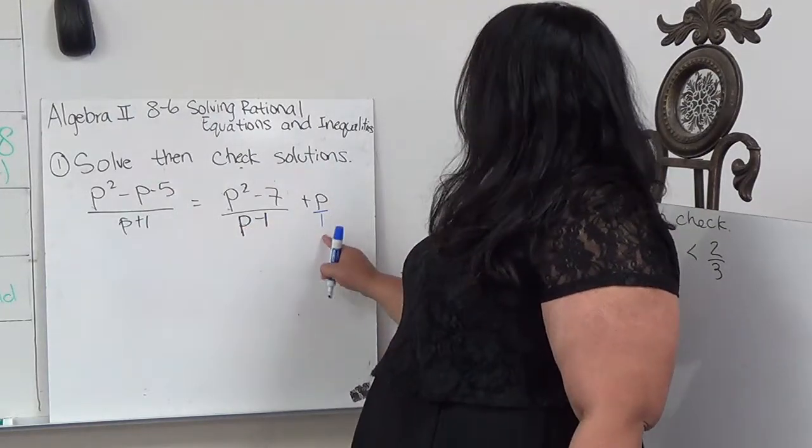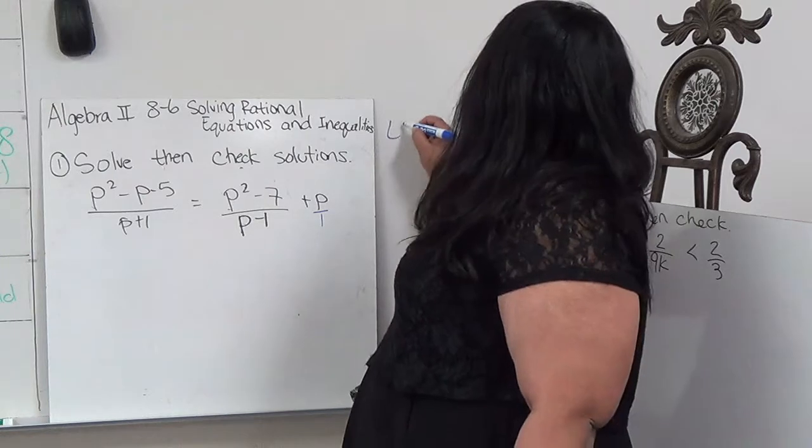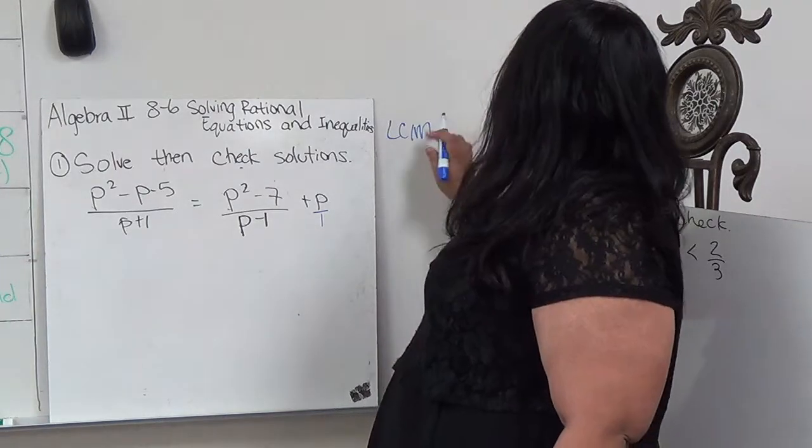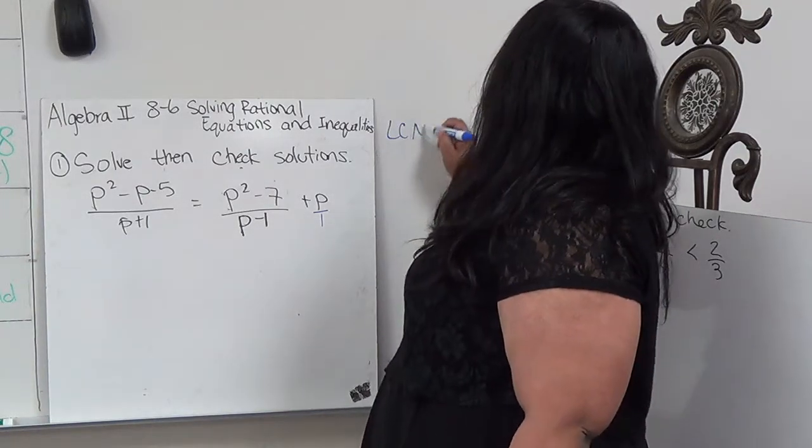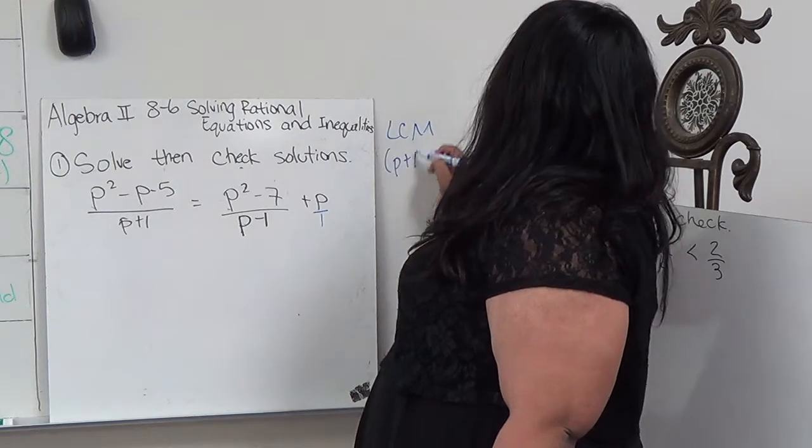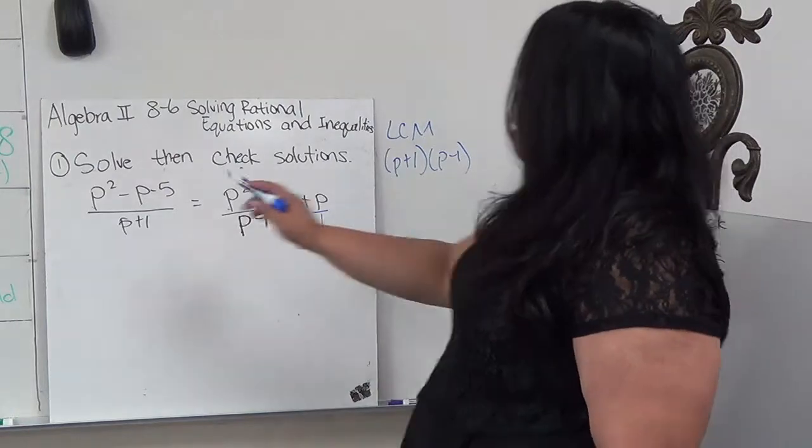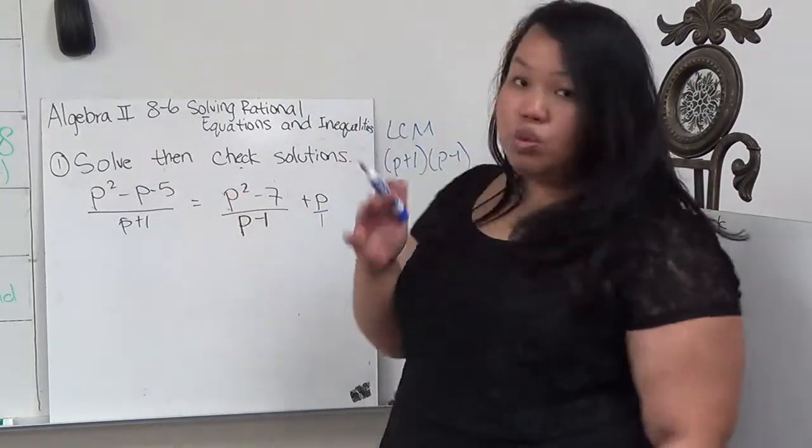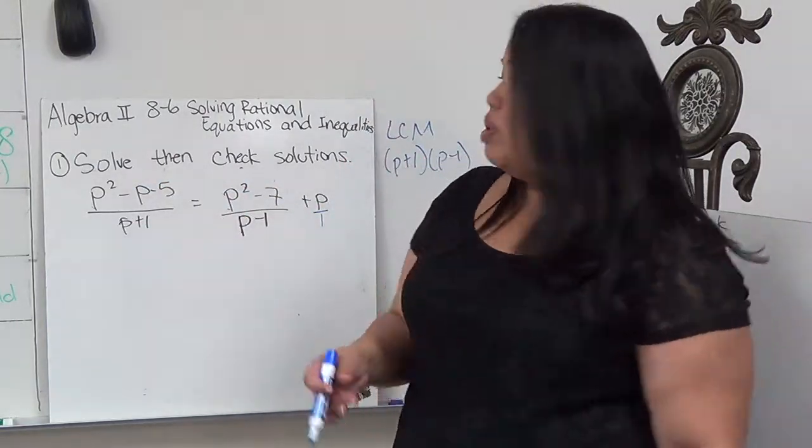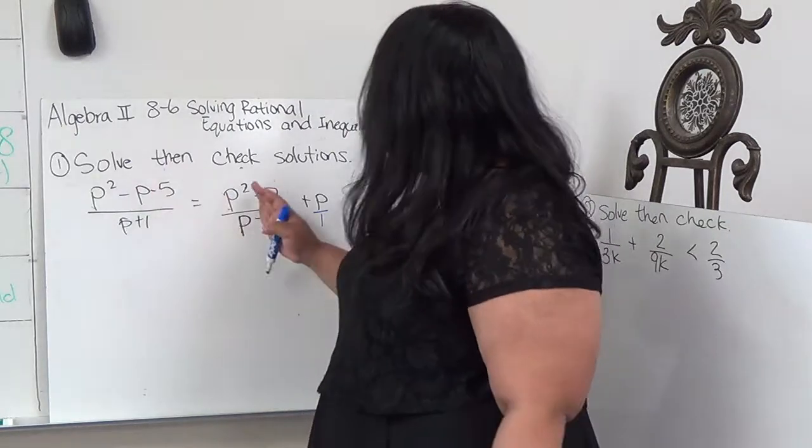Because this is 1, the LCM is (P+1)(P-1). So what I'm going to do is take my LCM and multiply everything, because what I'm going to do to one side, I have to do to the other, but when I'm multiplying and dividing, I have to do it to every single term. So anything separated by equal sign, plus or minus.